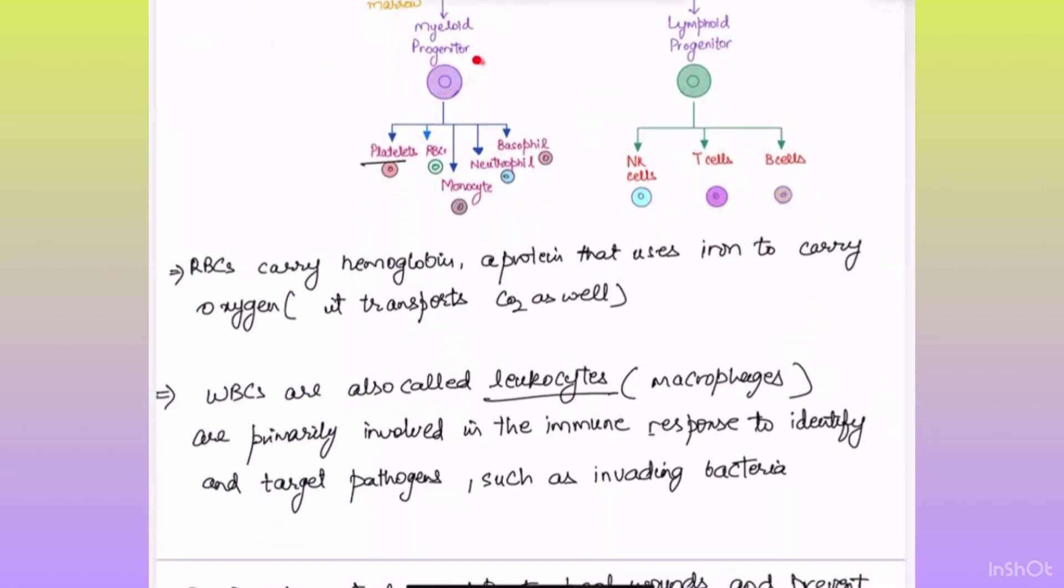Myeloid progenitor give birth to platelets, RBCs, monocytes, neutrophils and basophils, whereas lymphoid progenitor give birth to NK cells, T cells and B cells.